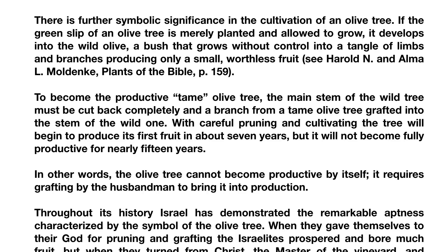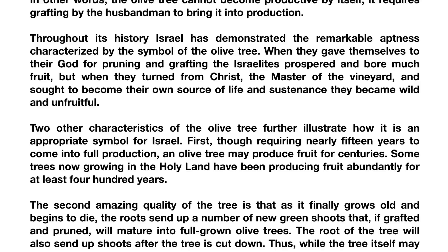They say, quote: There's further symbolic significance in the cultivation of an olive tree. If the green slip of an olive tree is merely planted and allowed to grow, it develops into the wild olive, a bush that grows without control into a tangle of limbs and branches, producing only a small, worthless fruit. To become the productive tame olive tree, the main stem of the wild olive tree must be cut back completely and a branch from the tame olive tree grafted into the stem of the wild one. With careful pruning and cultivating, the tree will begin to produce its first fruit in about seven years. It will not become fully productive for nearly 15 years. In other words, the olive tree cannot become productive by itself. It requires grafting by the husbandman to bring it into production.